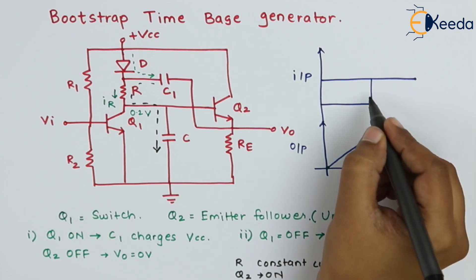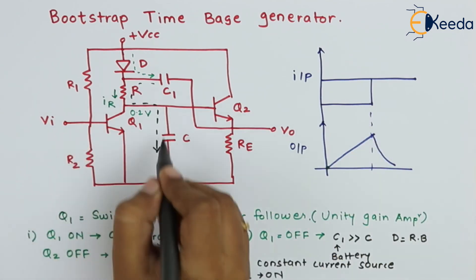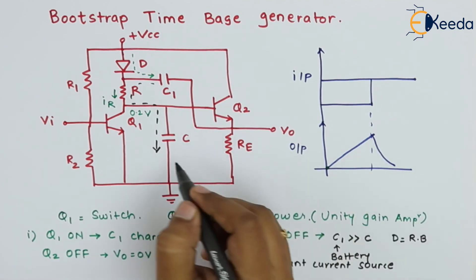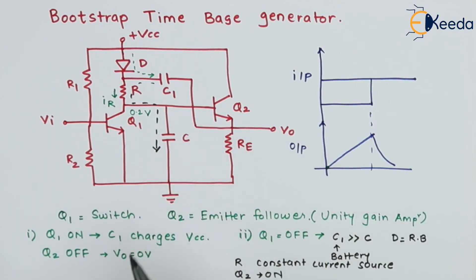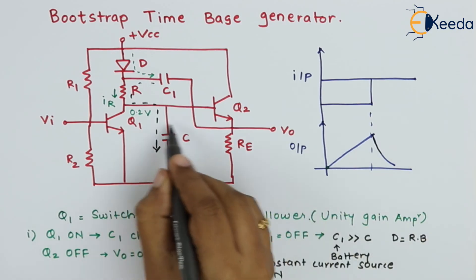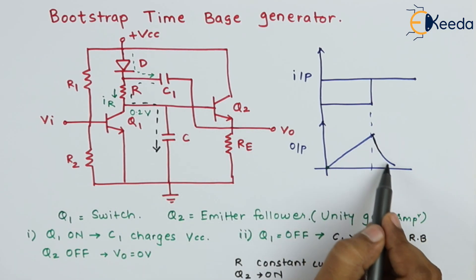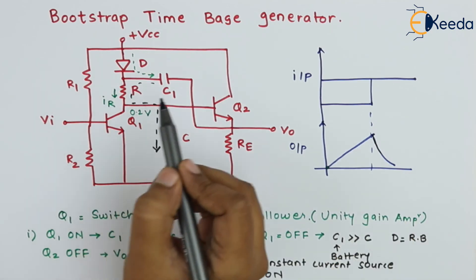Then if we again remove the pulse to make transistor Q1 on, again capacitor C will get discharged. As capacitor C discharges, the base voltage decreases to zero value.